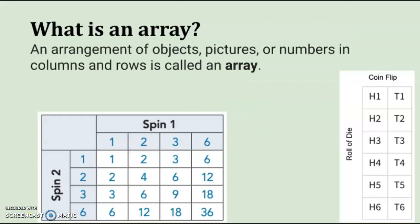So you might be asking, what is an array? Well, an array is an arrangement of objects, pictures, or numbers in columns and rows. We're going to be using arrays to help us calculate the probability of compound events.